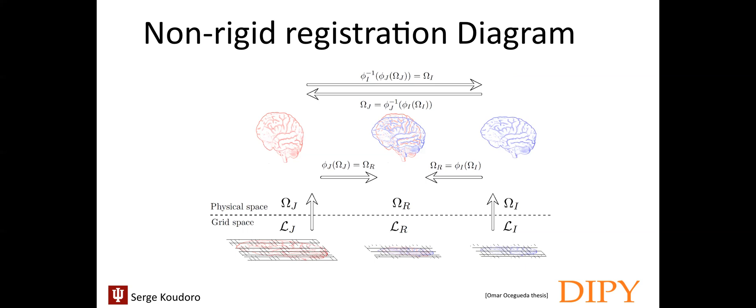Then, the goal of brain image registration is to compute the transformation phi, such that our image omega G is as similar as possible to the image omega I, according to a particular similarity metric. When those images are aligned, we can project them back to the static image grid space to get the exact alignment result.